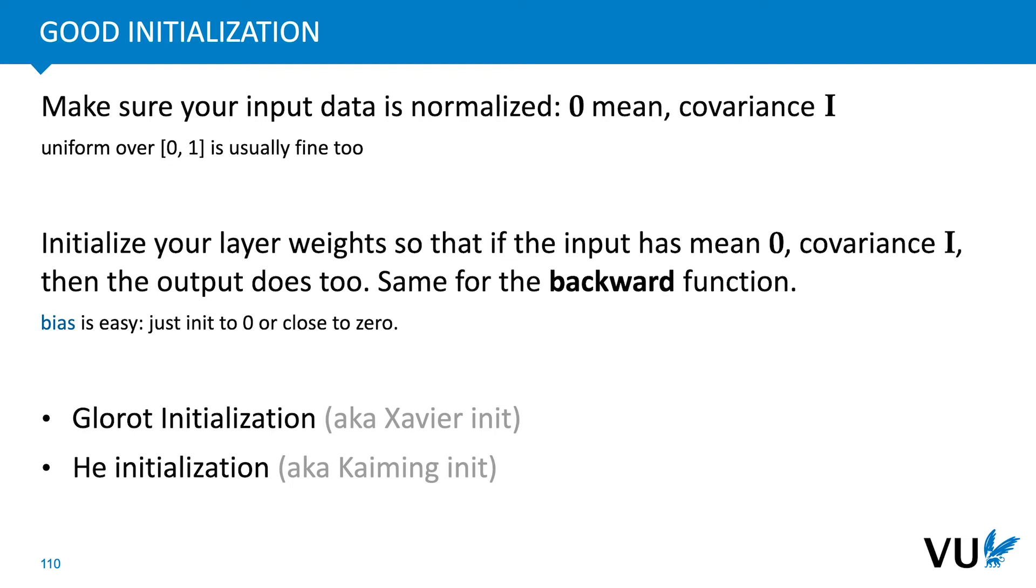So what is the principle of a good initialization? The main idea is first that we make sure that our input data is normalized. So we rescale our input data so that the mean is zero but the covariance is equal to the identity matrix. And this isn't very strict, this is usually the best especially if you have early ReLU activations, but something like a uniform distribution over zero one is usually fine as well. The main thing is that our input values need to lie within a definite range and that range needs to be not too far away from the origin. What we can then do once we've normalized our input data is initialize our layer weights so that they have the property that if the input has mean zero and covariance i then the output does as well. And we work it out so that the same holds for the backward function. And if we do this then we know that no matter how many layers we stack together the activations will always stay consistent. They will never blow up and they will never vanish, and the same holds for the backward.